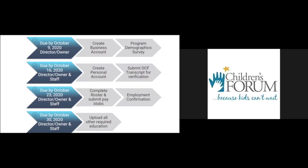Please be aware this orientation has been divided into four cohorts, each with a different set of deadlines. Tonight's training is for Cohort 1. Step one is due October 9th — directors will create a business account and complete the program demographic survey. Step two is due October 16th — all required staff must create a personal account and submit their DCF transcript for verification. Step three is due October 23rd — directors will complete their roster and all required staff will confirm employment. Step four is due October 30th — required staff will upload any other required education they hold.